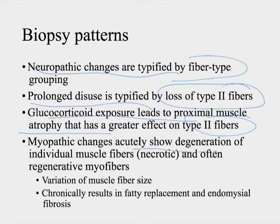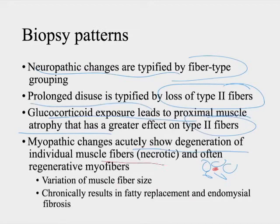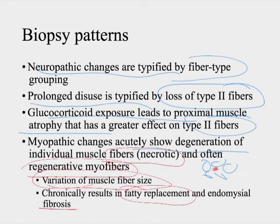For myopathic changes: acutely you see degeneration of individual fibers — one fiber appearing necrotic or degenerating among otherwise normal fibers. An important finding is variation in the size of fibers; myopathic pathology produces changes in muscle fiber size. Chronically, you get fatty replacement and endomysial fibrosis. In our specific case, we may see necrotic changes and regenerative fibers, we definitely see variation in muscle fiber size and fatty replacement, but we do not see much fibrosis.